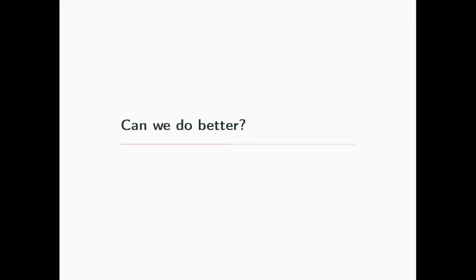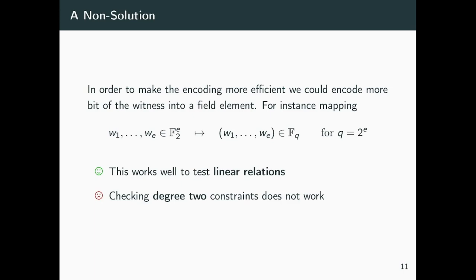Can we do better? The best embedding we can hope for in this scenario would consist of interpreting any e bits of the witness as an element over the larger field. This embedding would be optimal in the sense that the witness does not increase in size after we embed it. Furthermore, we can perform this embedding in such a way that is linearly homomorphic, meaning that checking linear equations over the Boolean field F2 can be easily done through the embedded image over the larger field.